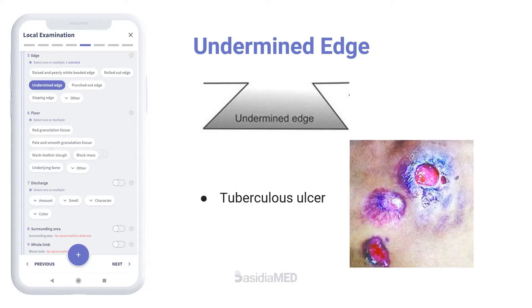Undermined edge is seen when an infection at an ulcer site affects the subcutaneous tissues more than the skin. The overhanging skin appears thin, friable, reddish blue, and unhealthy.